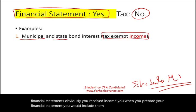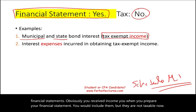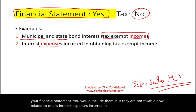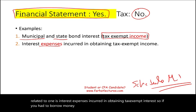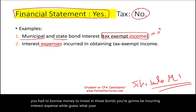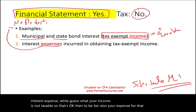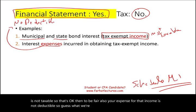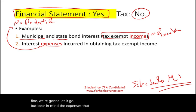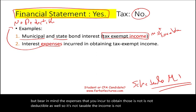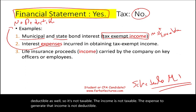Related to tax-exempt bond interest is interest expense incurred to obtain that tax-exempt income. If you borrowed money to invest in those bonds, you incur interest expense. Since the income is not taxable, the expense to generate that income is also not deductible. So the income is not taxable and the expense to generate it is not deductible.